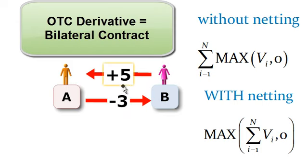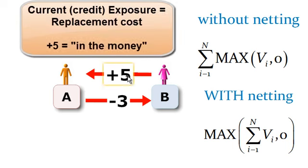So making up some numbers here for the first transaction, I'm assuming that the current credit exposure is positive five. This is from the perspective of counterparty A. Positive five means that if counterparty A had to replace this contract, it would cost five. Or if counterparty B were to default, then counterparty A would lose five.